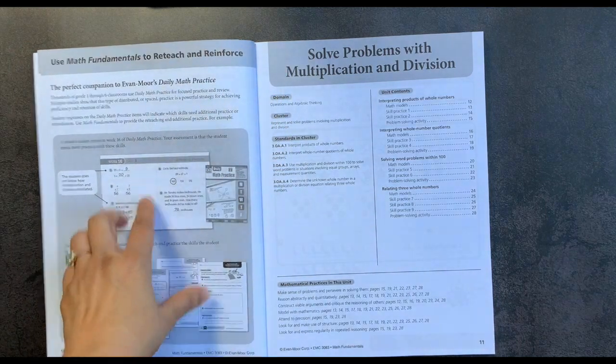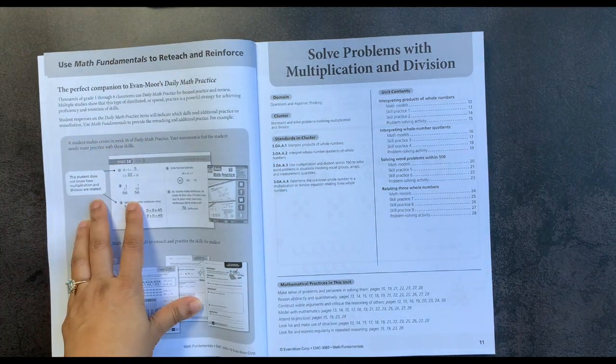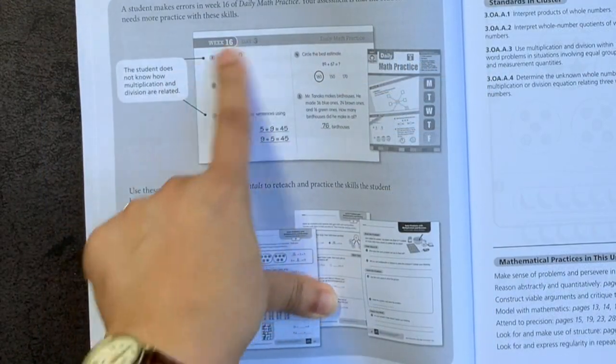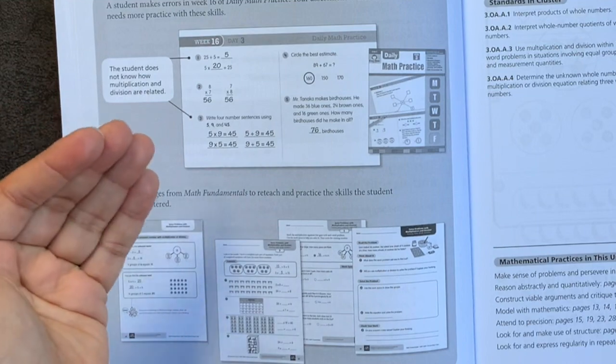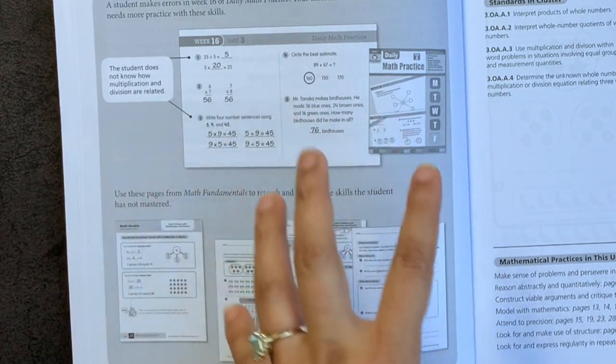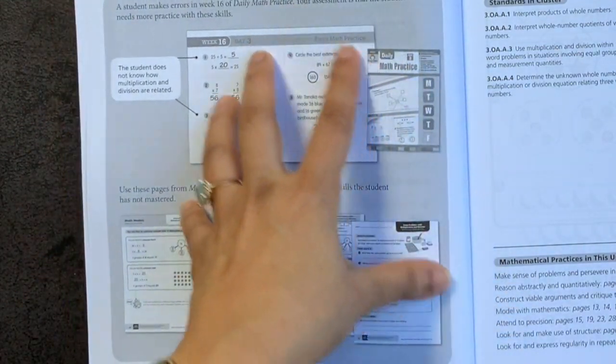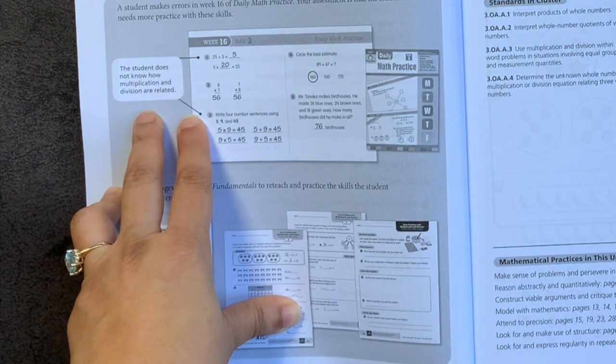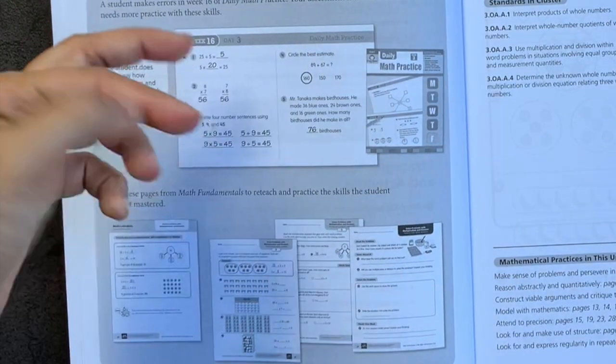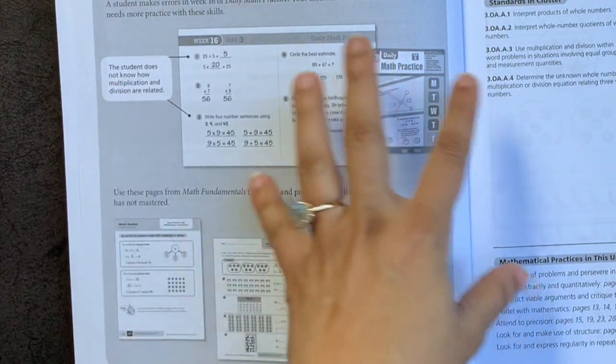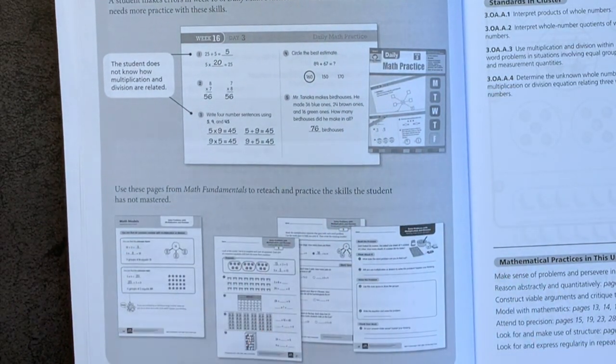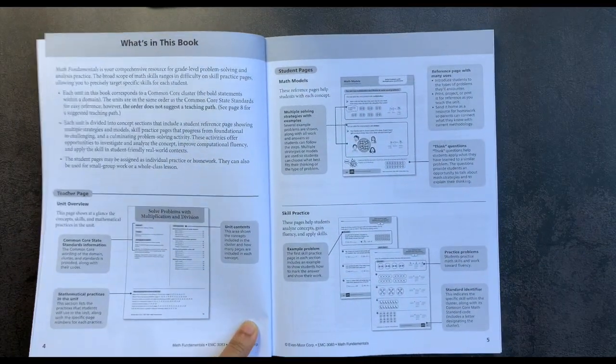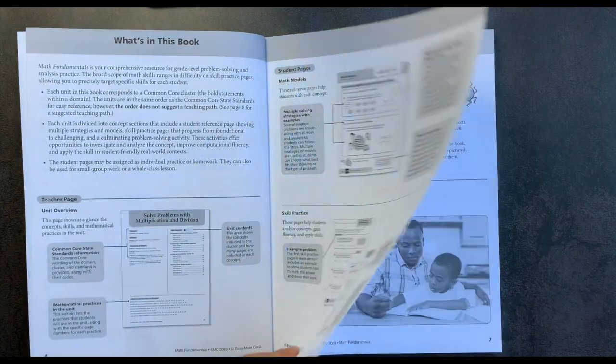Where you notice that the student does one problem or two problems incorrectly suggesting that they don't understand a particular concept. So here for example, if they make mistakes with multiplication and division and the relation between the two, you can use particular pages from Math Fundamentals directed to those skills to practice that. If we go back a little bit, you'll notice that the first few pages of Math Fundamentals basically go through the style of the book.